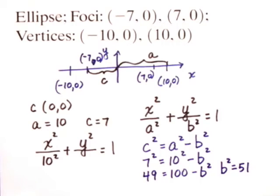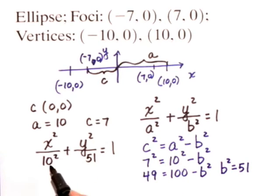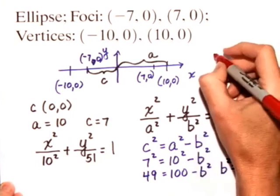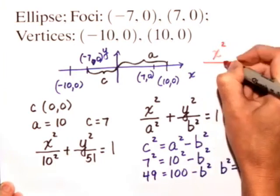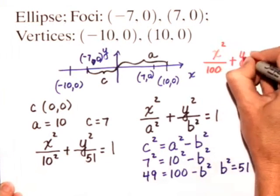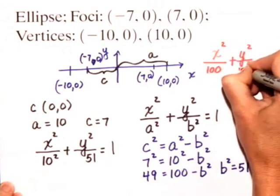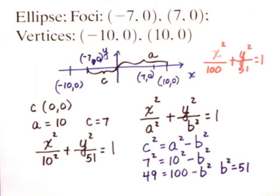Now we can put b², which is 51, right where it goes in the formula. And instead of writing it as 10², I can write it as 100. So I'm going to take what I've written here and write the final answer. I'll have x² over 100 plus y² over 51 equals 1. That's the standard form of this ellipse.